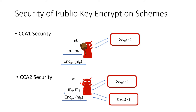On the other hand, in CCA2 security, which is a stronger definition, the adversary retains access to the decryption oracle even after it obtains the challenge ciphertext. This means in particular that the adversary can obtain a challenge ciphertext, modify it to get any related ciphertext, and continue to query the decryption oracle. This is allowed as long as the adversary does not query the decryption oracle on the exact same ciphertext that it obtained as a challenge.